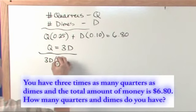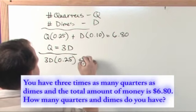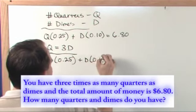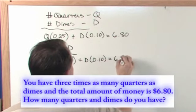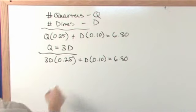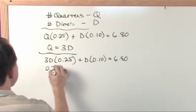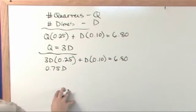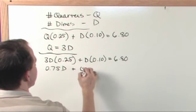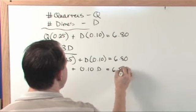3D times 25 cents, 0.25, plug it in there, plus D times 0.10 D is equal to 6.80. And we'll just multiply this through here. 3 times 0.25 is 0.75 D plus 0.10 D is equal to $6.80.